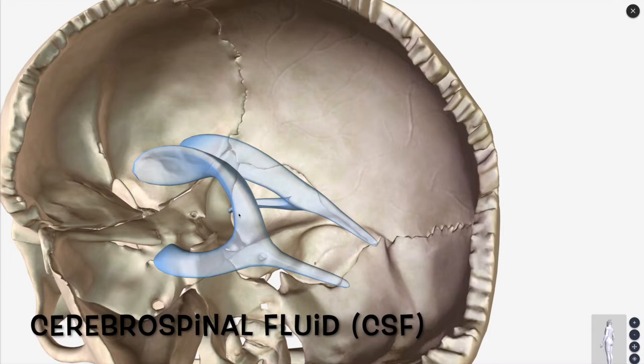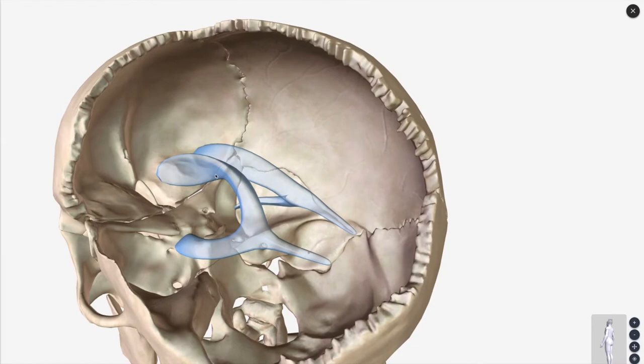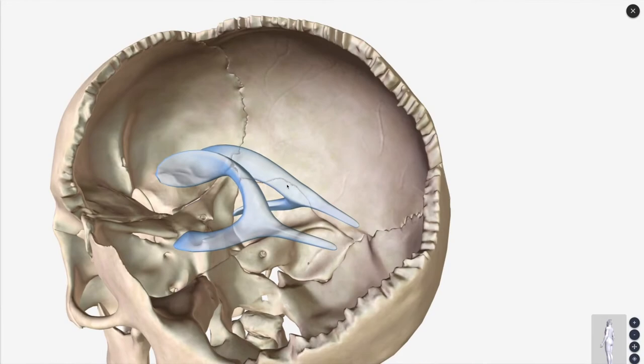What happens next with the lateral ventricles? Where are they going to go next? They're going to go to the third ventricle. So this is the third ventricle.